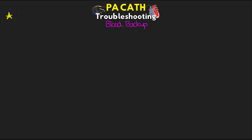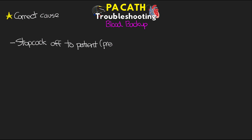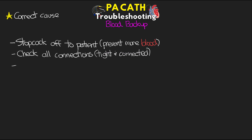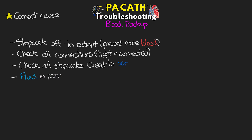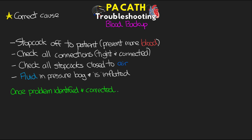The next troubleshooting scenario is when you have blood that's backed up into the PA catheter or the pressure tubing. If you ever notice blood in any part of your PA catheter tubing or pressure tubing, you need to correct the cause. First, turn the stopcock off to the patient to prevent more blood from backing up. Check all your connections to make sure they're tight and connected, and check all stopcocks to make sure they're closed off to air. Ensure that you have enough fluid in your pressure bag and that it is appropriately inflated. Once the problem is identified and corrected, open the system back up to the patient with the stopcock and run a fast flush to get the blood back to the patient and clear your line.